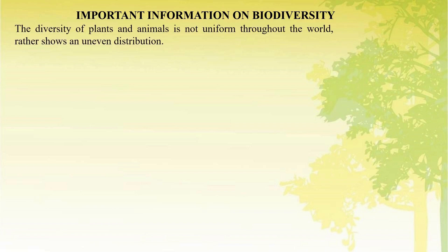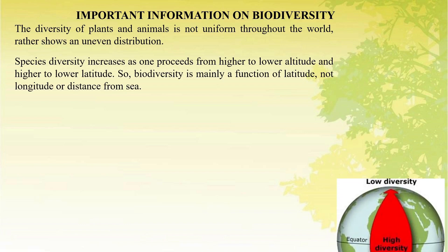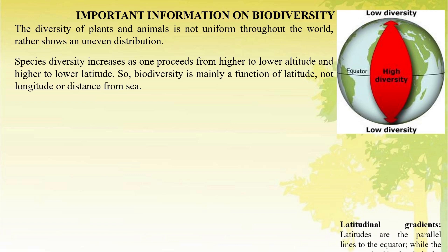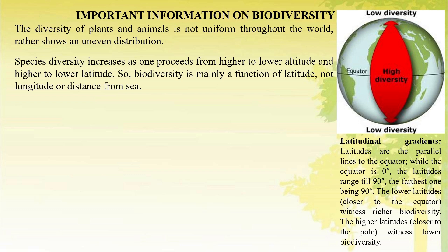Now we discuss some important information on biodiversity. The diversity of plant and animal is not uniform throughout the world; rather, it shows an uneven distribution. Species diversity increases as one proceeds from higher to lower altitude and higher to lower latitude. So diversity is mainly a function of latitude, not longitude or distance from sea.